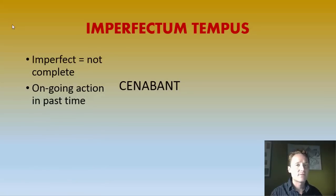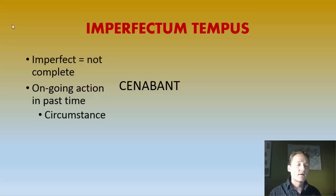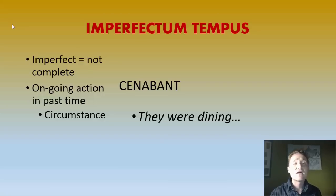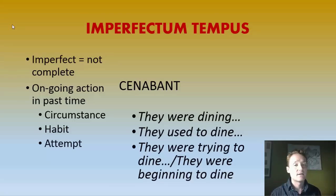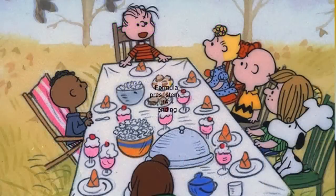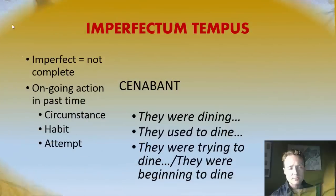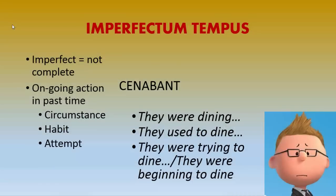For example, we have the verb canabant. The possibilities for translating this would be: circumstantially — they were dining; habit — they used to dine; attempt — they were trying to dine; or they were beginning to dine. These meanings are built into the imperfect. In English we have several different ways of expressing this idea, but all of those meanings are implicit in the imperfect forms we see in Latin.